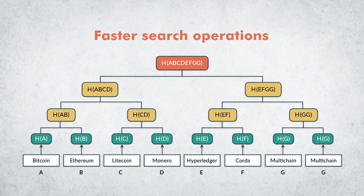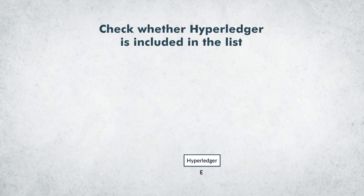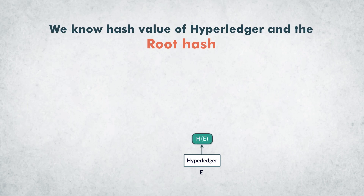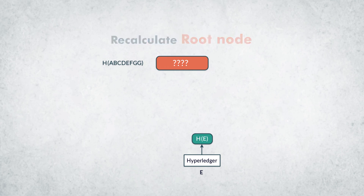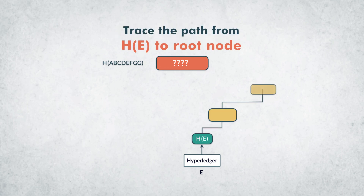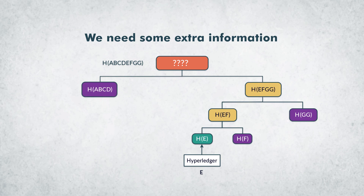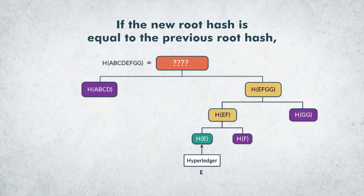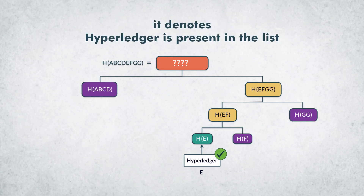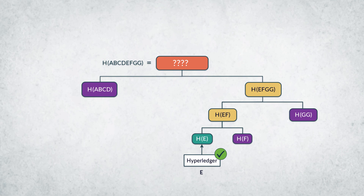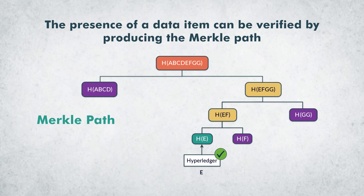One can easily check whether a data item is represented by the tree without traversing the entire tree. For example, if we need to check whether Hyperledger is included in the list, the data we have is the hash value of Hyperledger and the root hash. One can recalculate the root node by tracing the path from Hyperledger to the root node. For this, we need some extra information. If we get the missing values, the root hash can be recalculated. If the new root hash is equal to the previous root hash, it denotes Hyperledger is present in the list. The extra values required to recalculate the root hash are called Merkle path. The presence of a data item can be verified by producing the Merkle path for it.